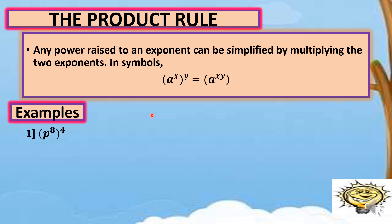Example number one, we simplify quantity p raised to 8 raised to 4. We simply copy variable p and then multiply the two exponents, which is 8 and 4. So multiply 8 times 4, that is equal to 32. So our final answer is p raised to 32.